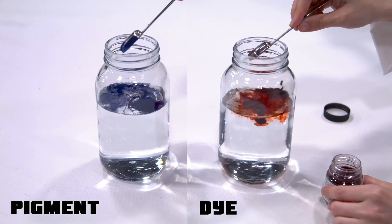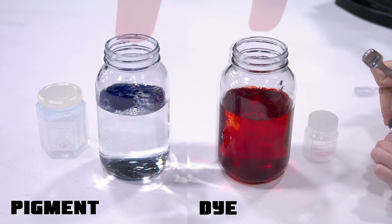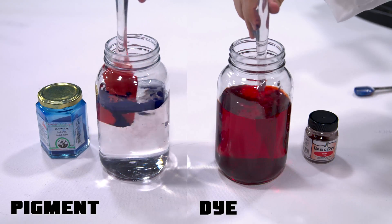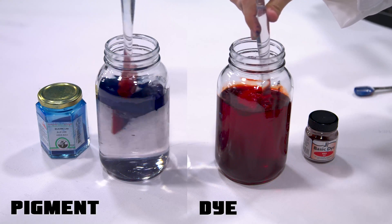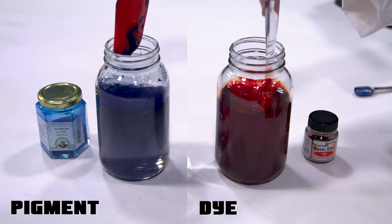So as you can see here, we have red dye that's being put into one jar, and then a little pigment that's being poured into the other. You can kind of tell as soon as I put them in that the dye starts to dissolve and create a solution, whereas the pigment likes to just sit on top and never really fully combines with the water.